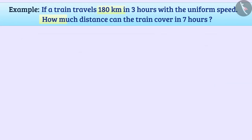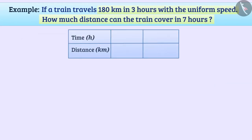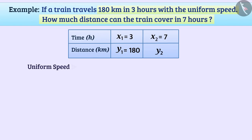For the given conditions, we can make a table like this. When the time is 3 hours, the distance is 180 kilometers. When the time is 7 hours, the distance traveled by the train is y2. Here, uniform speed means that a fixed distance is covered in a fixed amount of time.